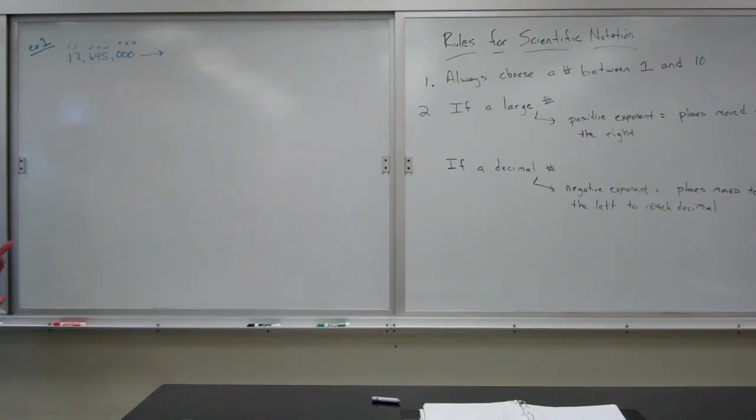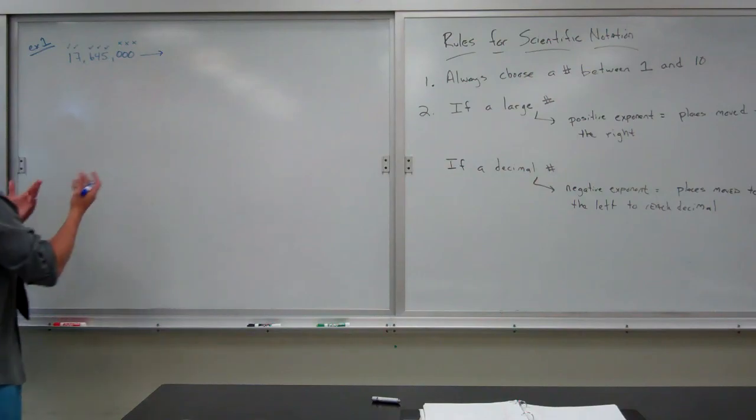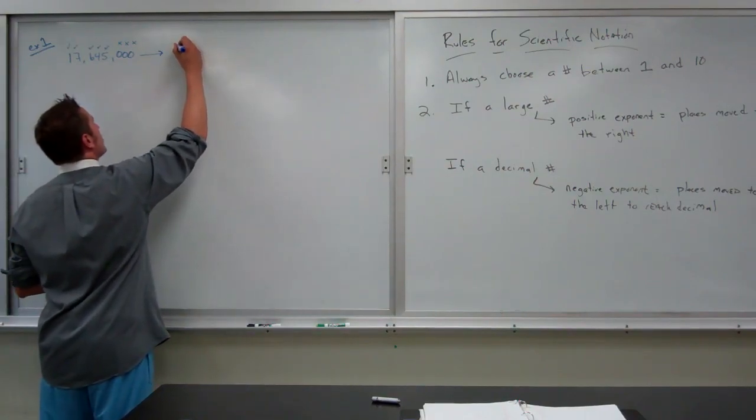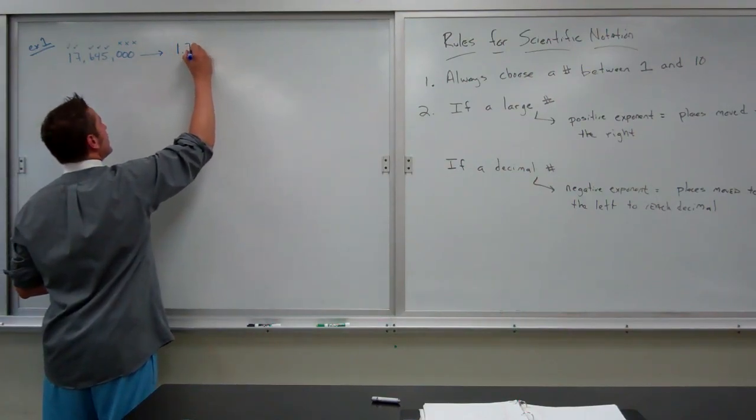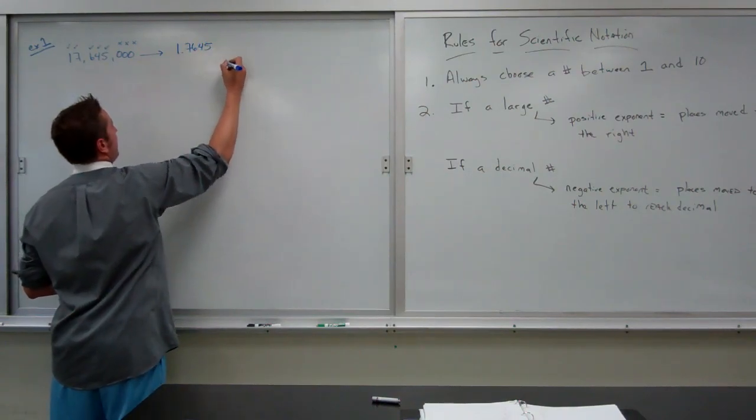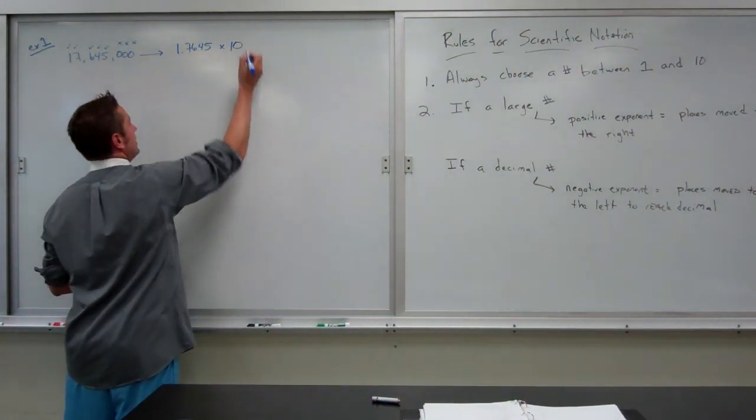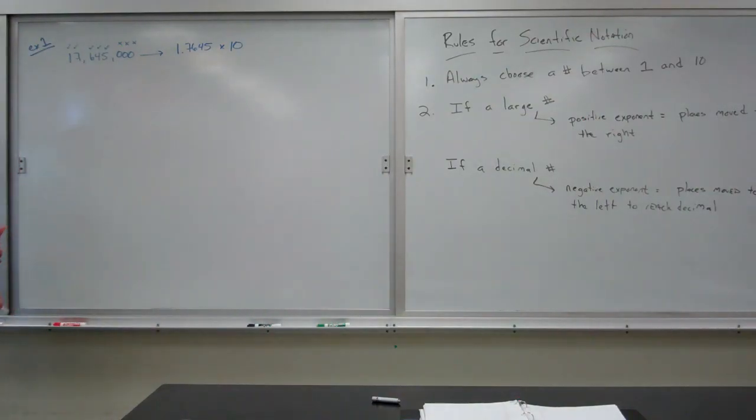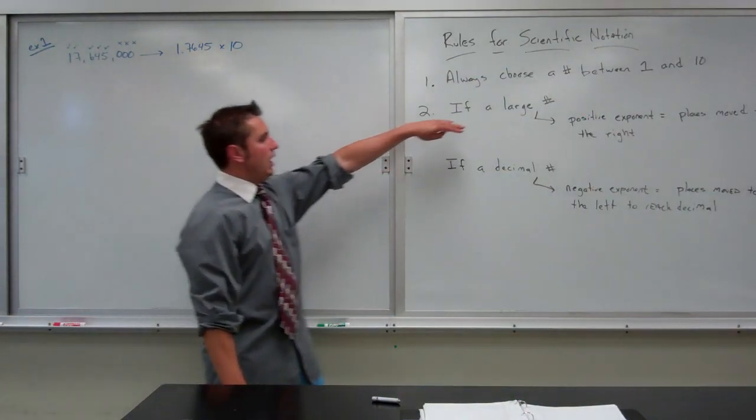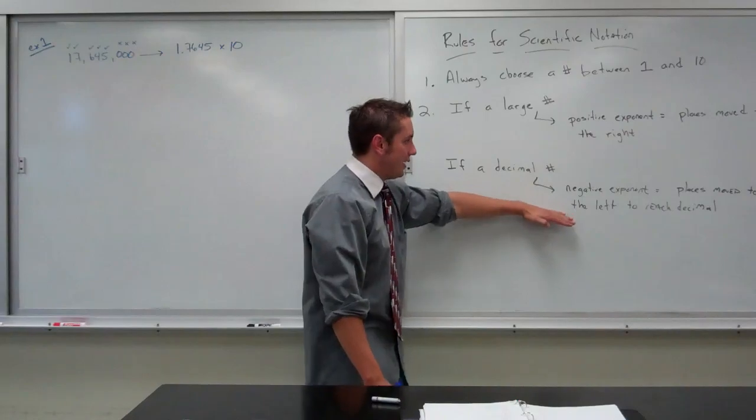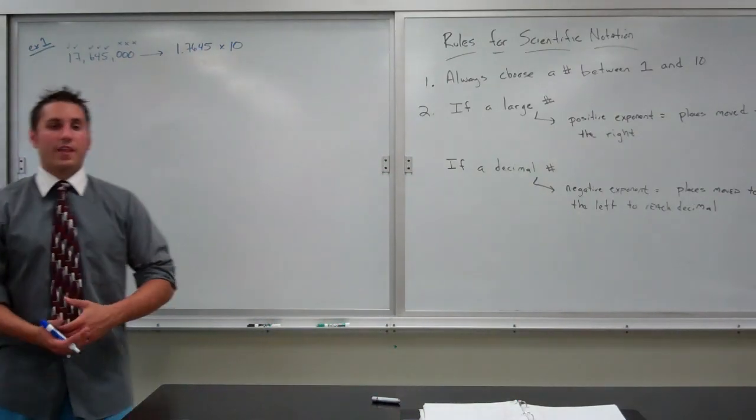So, the number I choose between 1 and 10 has to have 5 sig figs. So, I will choose 1.7645 times 10 and then my exponent is either going to be positive or negative due to the type of number that I have.